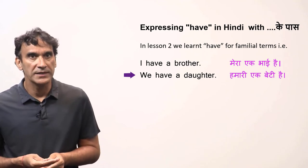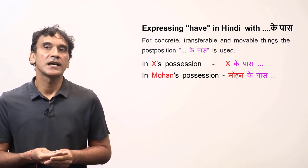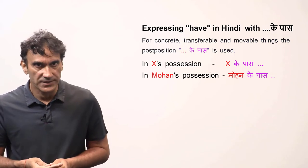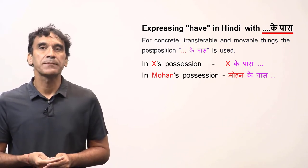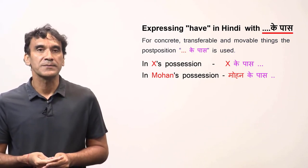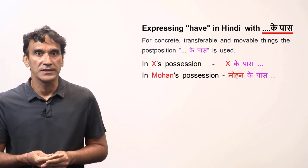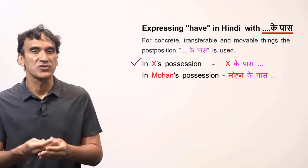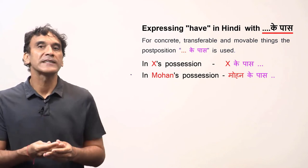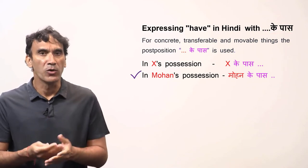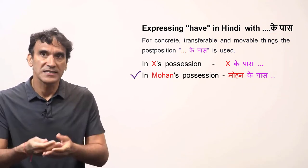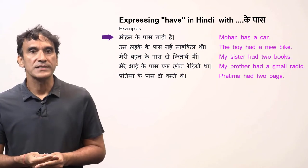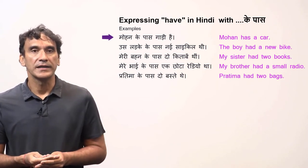Let's now learn how to express 'have' with concrete and transferable objects. The postposition 'ke paas' is used to express the verb 'have' for concrete objects. It can be understood as 'in someone's possession,' so 'Mohan ke paas' means 'in Mohan's possession,' which effectively means 'Mohan has.' Let's take some examples — 'Mohan ke paas gaadi hai.'